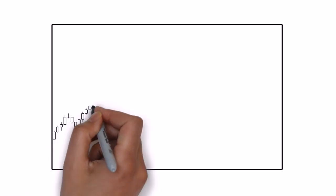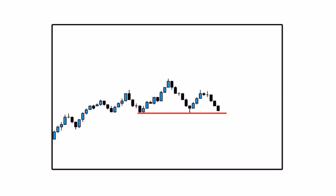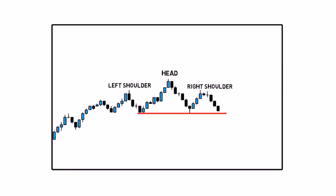Let's take a look at the chart. In an uptrend, the first peak forms. After a small retracement, price pushes higher creating a higher peak. But as the bull trend is getting exhausted, bears drive the price down again. Then, seeing this as an opportunity to buy cheaply, bulls jump back in, but this time they fail to reach the previous high and bears take control, driving the price down again.